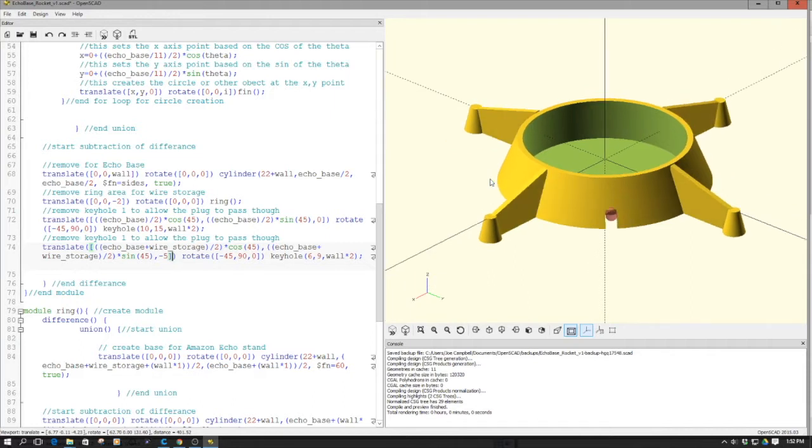Now, this is designed for the full-size Echo tube. Makes it sort of look like a rocket. I'll show some pictures after we print it out so you kind of get a better idea.